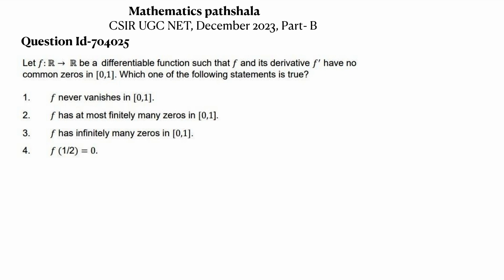Which one of the following statements is true? Option 1: f never vanishes in the closed interval [0,1]. Option 2: f has at most finitely many zeros in [0,1]. Option 3: f has infinitely many zeros in [0,1]. Option 4: f(1/2) equals 0.